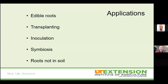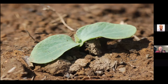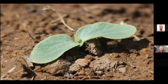There are some applications as gardeners: edible roots, transplanting, inoculation, and many more. This cucurbit seedling — might be a pumpkin, watermelon, or cucumber — has a very tender root system when young, and it does not handle transplanting very well. When you move them, those root hairs tend to break and get damaged, and they just don't survive very well through transplant. That is why we as gardeners have best success when we are direct seeding those types of plants into our garden.